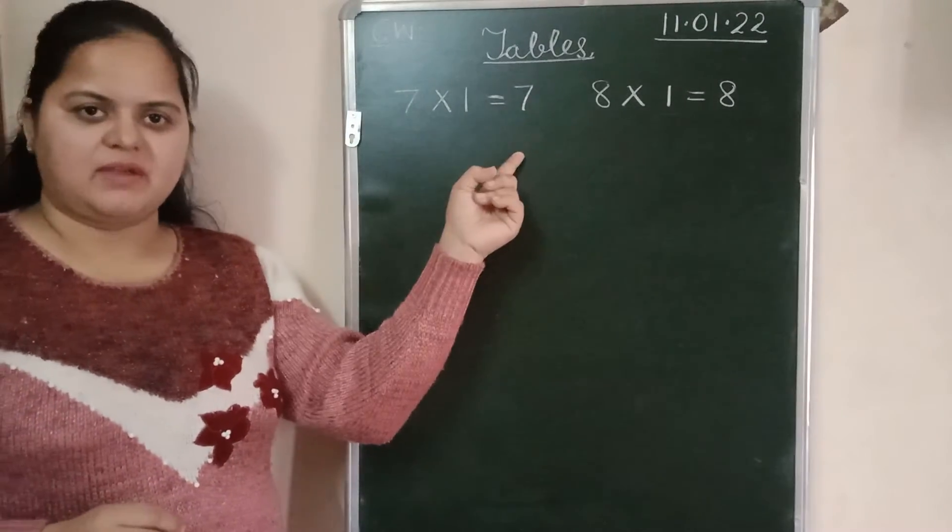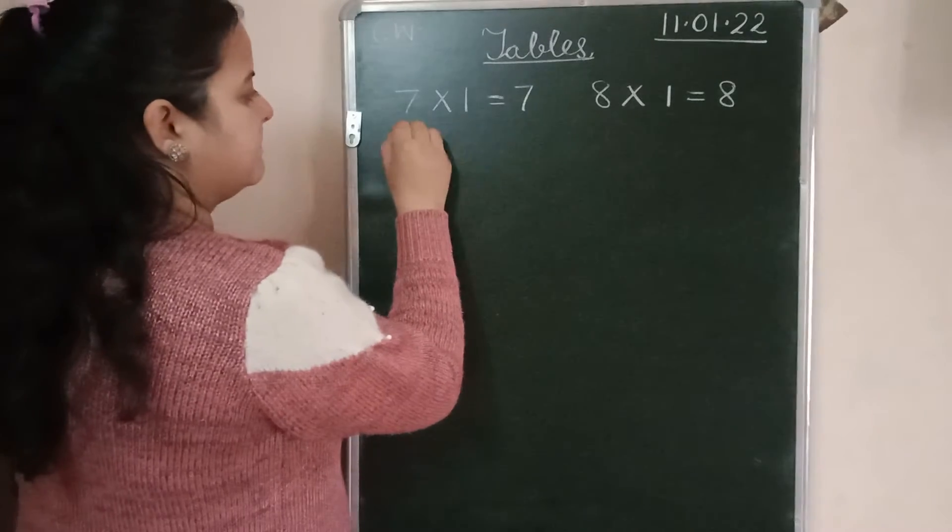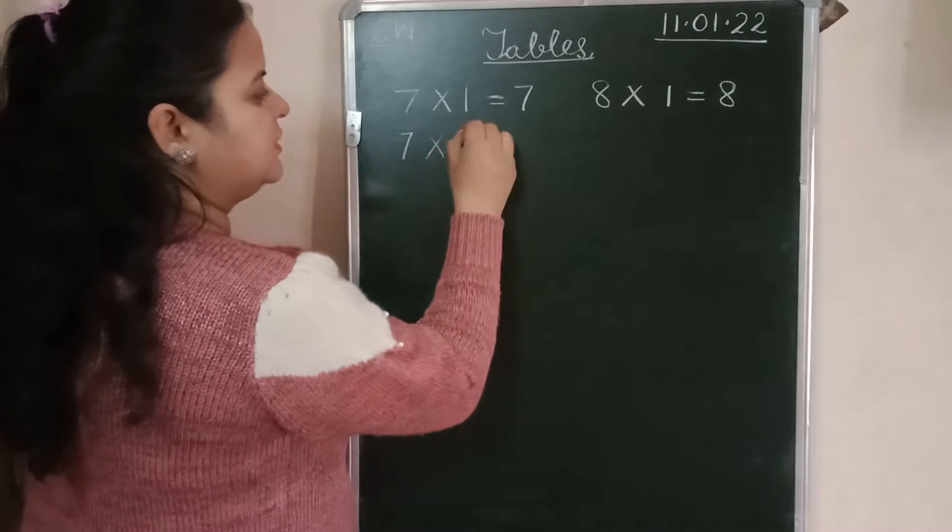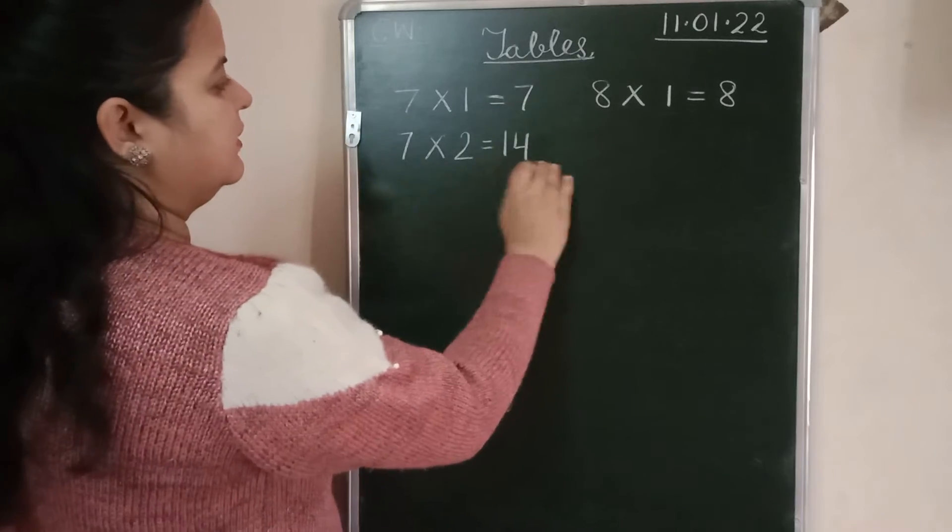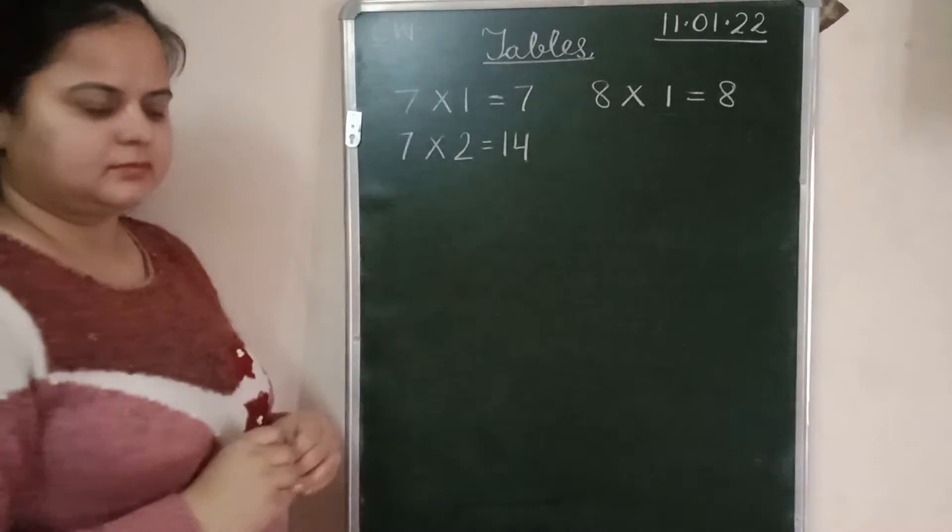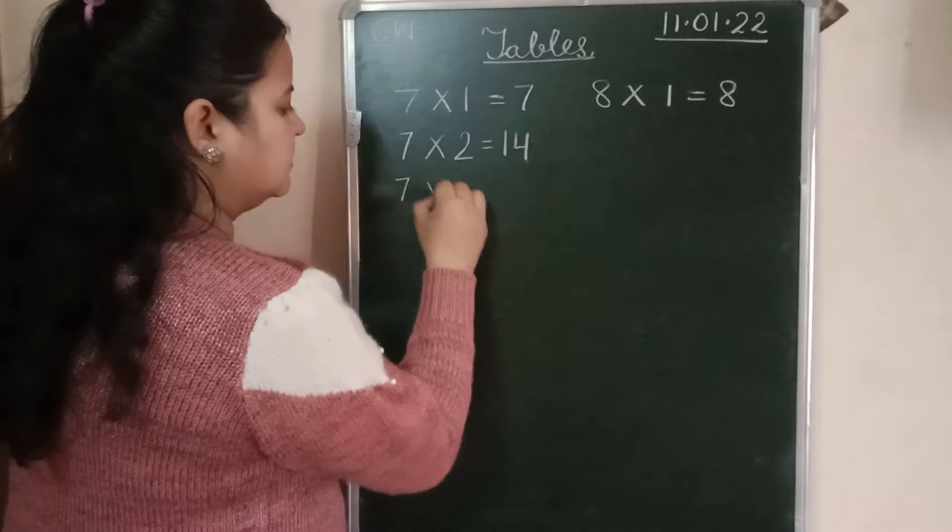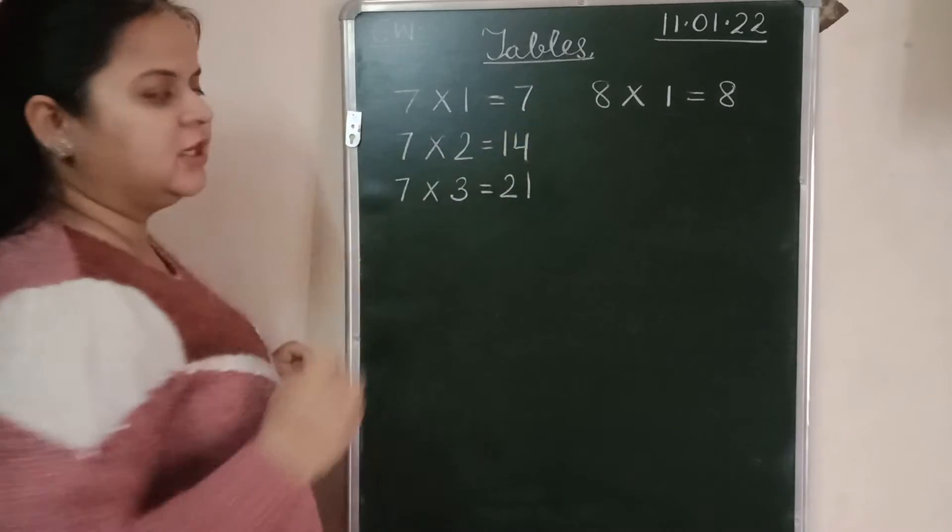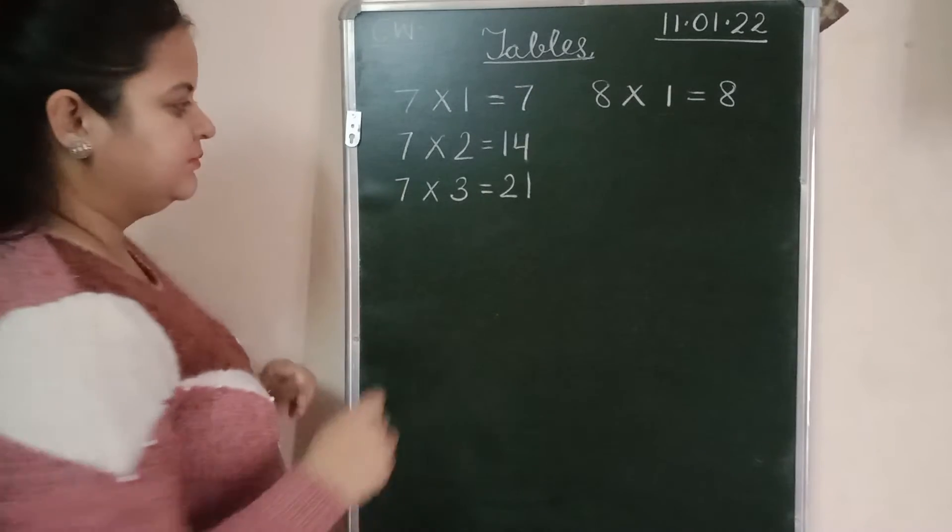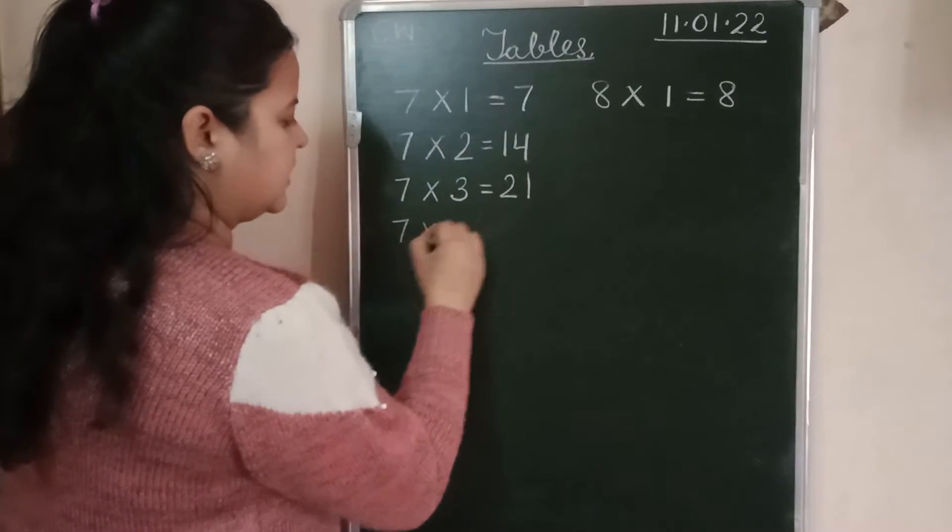7-1s are 7. 7-2s are 14. 7-3s are 21. Writing should be neat and clean. Okay. 7-4s are 28.